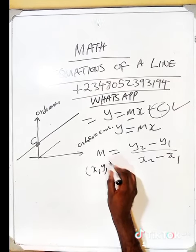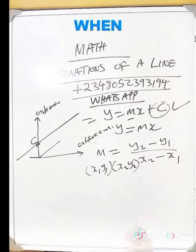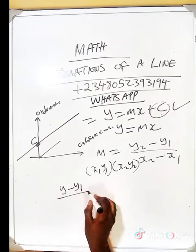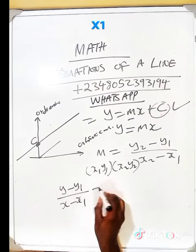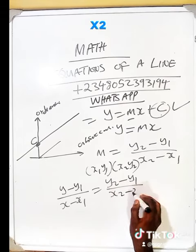Two points like x1, y1 and x2, y2. The other one is when you're trying to form the equation of a line when you're being given two points. You can simply apply y minus y1 over x minus x1 equals y2 minus y1 over x2 minus x1.